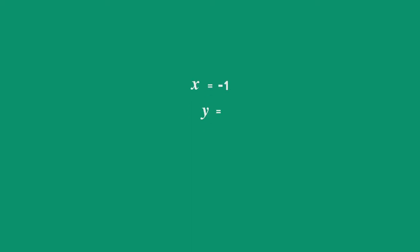y = -3(-1)² - 6(-1) - 1. Now, we simplify this as follows.